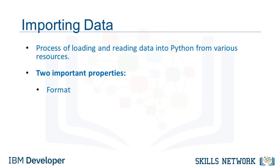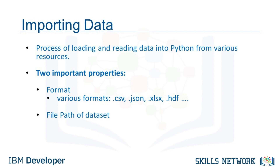Format is the way data is encoded. We can usually tell different encoding schemes by looking at the ending of the file name. Some common encodings are CSV, JSON, XLSX, HDF, and so forth. The path tells us where the data is stored. Usually it is stored either on the computer we are using or online on the Internet.